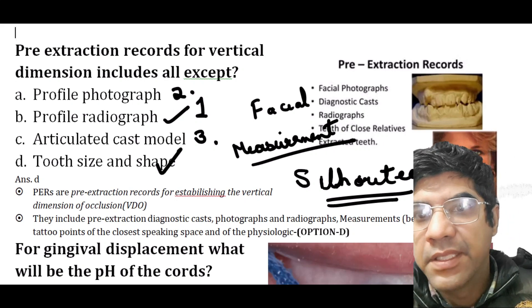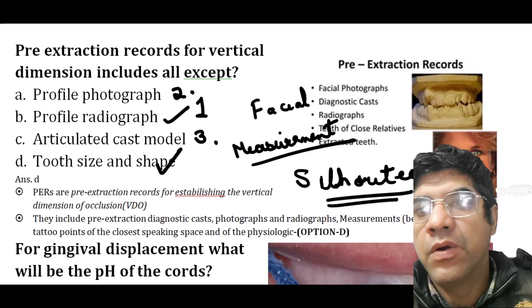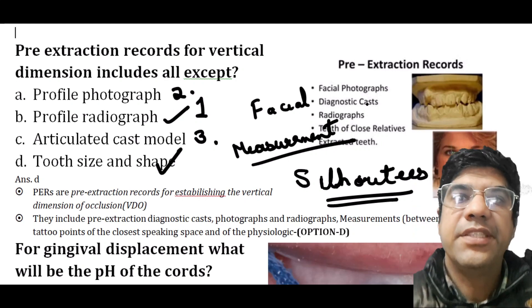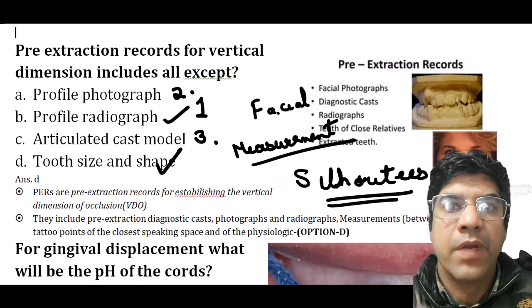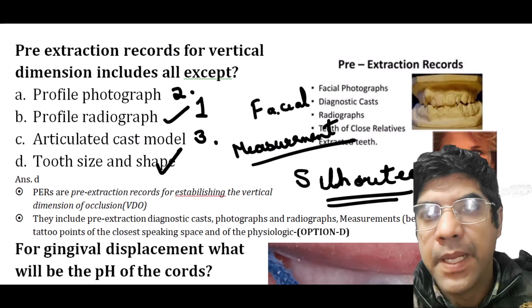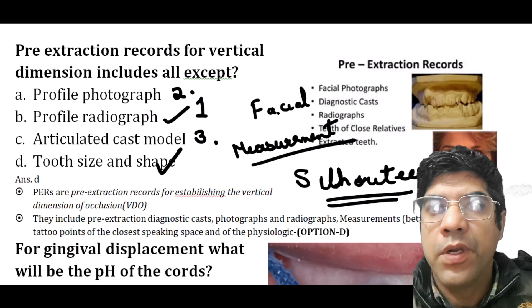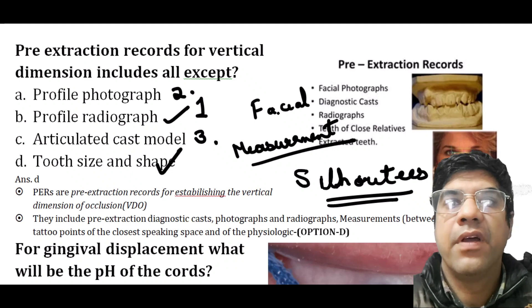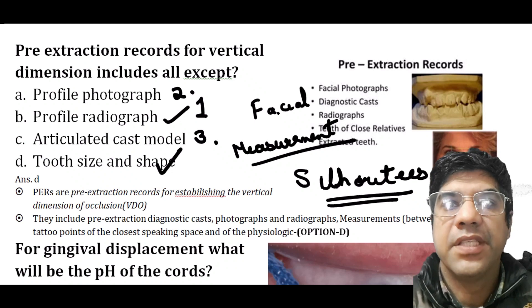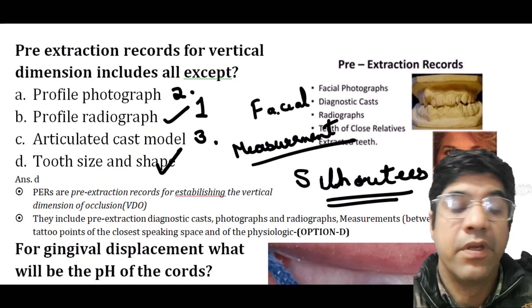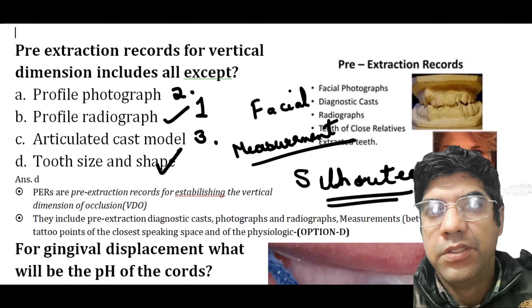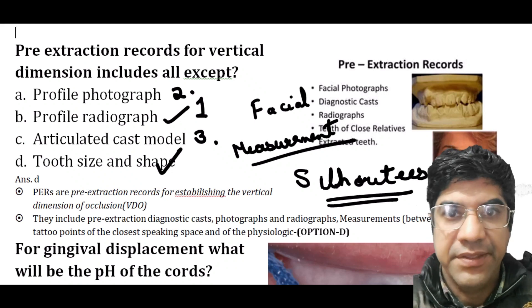These are the methods used to measure pre-extraction records. Tooth size and shape are important considerations in overall treatment planning, but they are not specifically categorized as part of the pre-extraction record for establishing vertical dimension. So the answer is D.